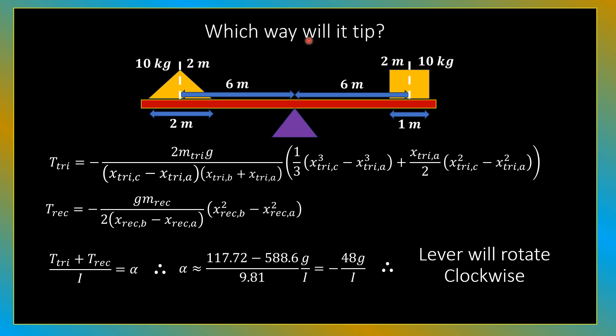So which way will it tip? If we substitute the numbers into our general equation and simplify, we get a solution of alpha is approximately equal to negative 48g over i. What does this mean? This means that the lever must rotate clockwise, because g and i must be positive or greater than or equal to zero. We're not dealing with rotating mercury anti-gravity engines as seen in the TR-3B. The lever must rotate clockwise.